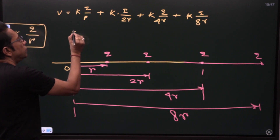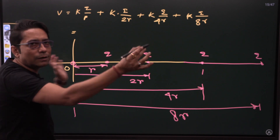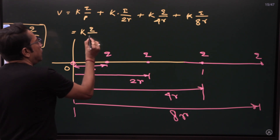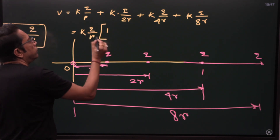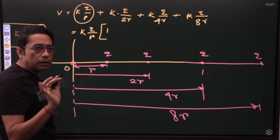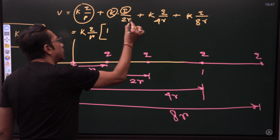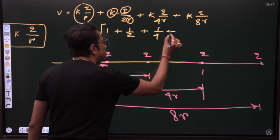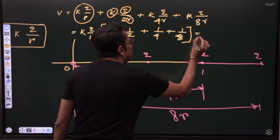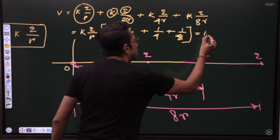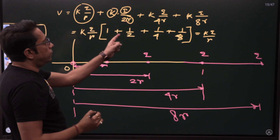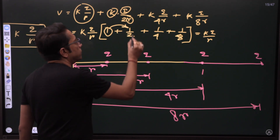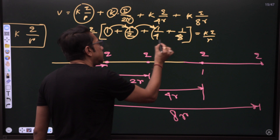To find the total potential due to all four, we take KQ/R as a common factor. The first term becomes 1, the second term becomes one-half, the third becomes one-fourth, the fourth becomes one-eighth. We notice these terms are each half times the previous — so the common ratio R equals one-half.